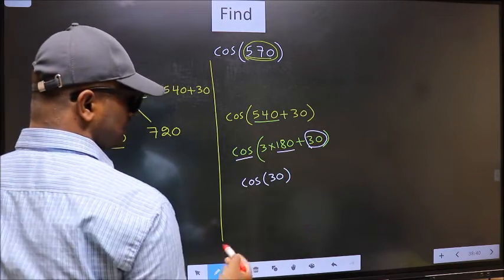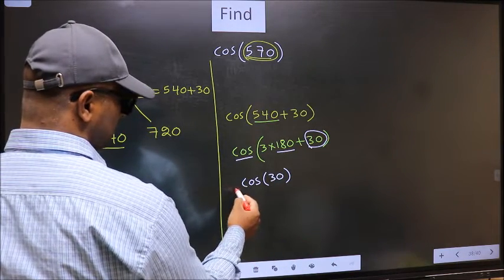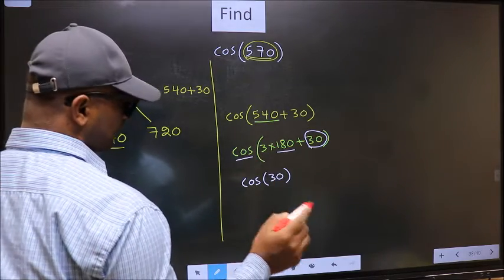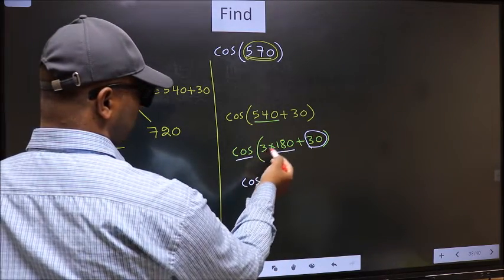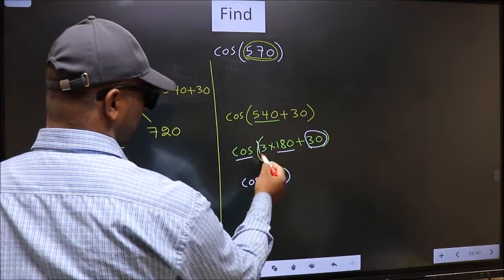Now, the question is, will we get here plus or minus? To answer that, we should look at the number before 180. That is 3.